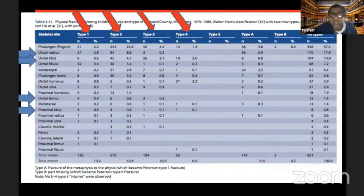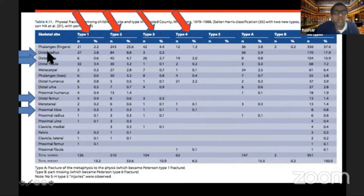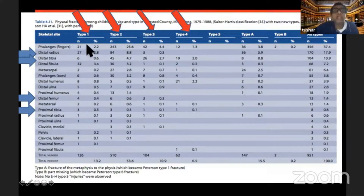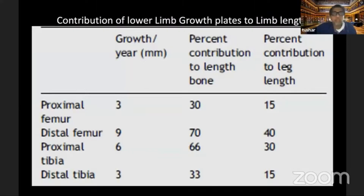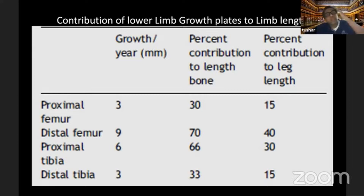A summary chart shows that the most common injuries we actively treat are distal radius, distal tibia, and distal femur, which are mostly type 1 and type 2; the distal tibia is mostly type 3. Keeping this chart in front of us helps us understand where the injury is and the most likely injury pattern at every particular joint. All growth issues around the knee have a huge contribution, so we must be more alert, treat with greater sincerity, and follow up more rigorously when dealing with distal femur and upper tibial growth plate injuries.